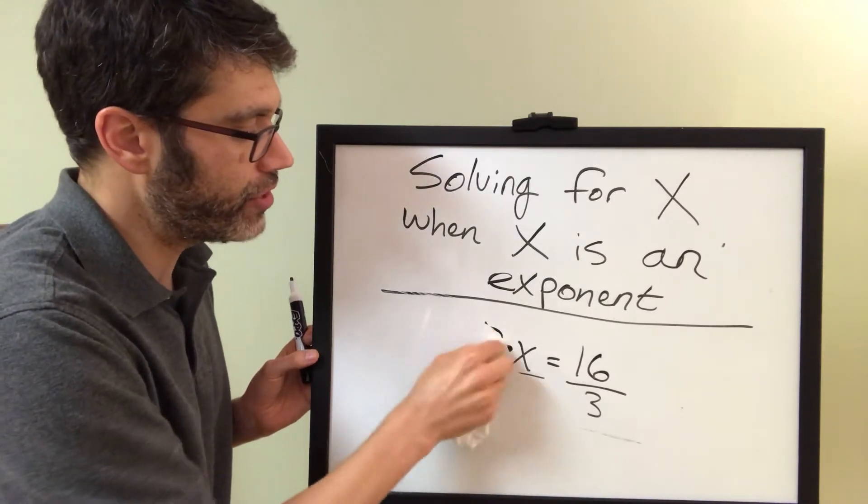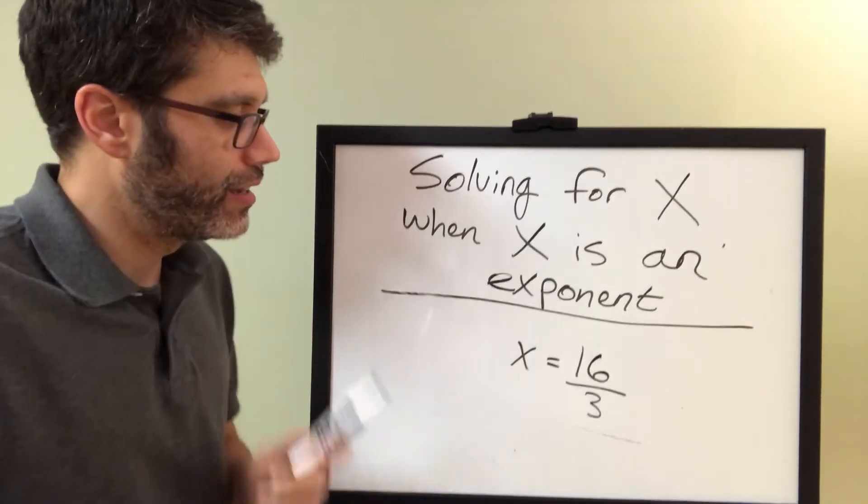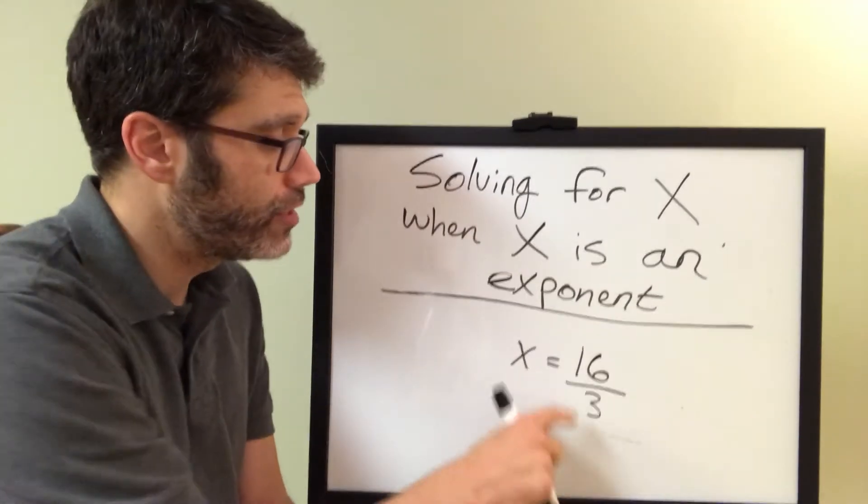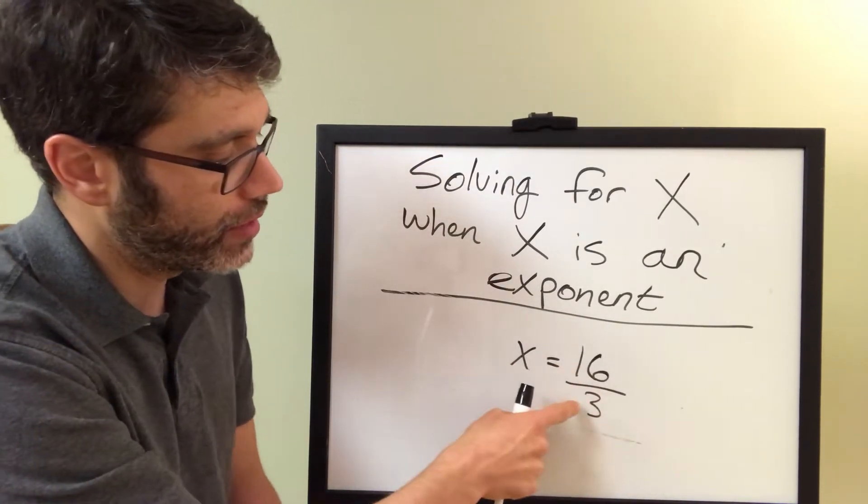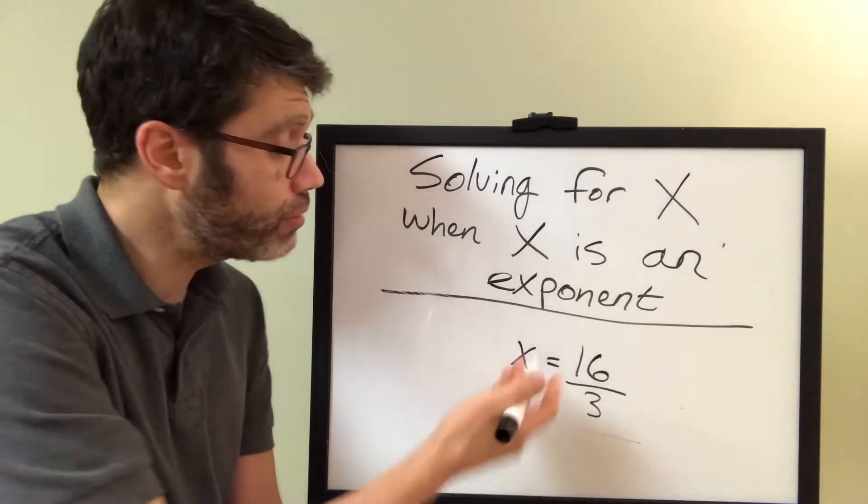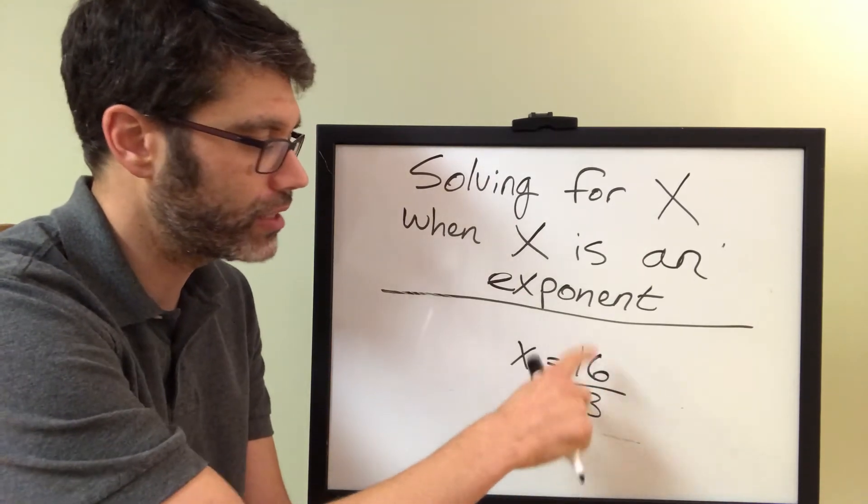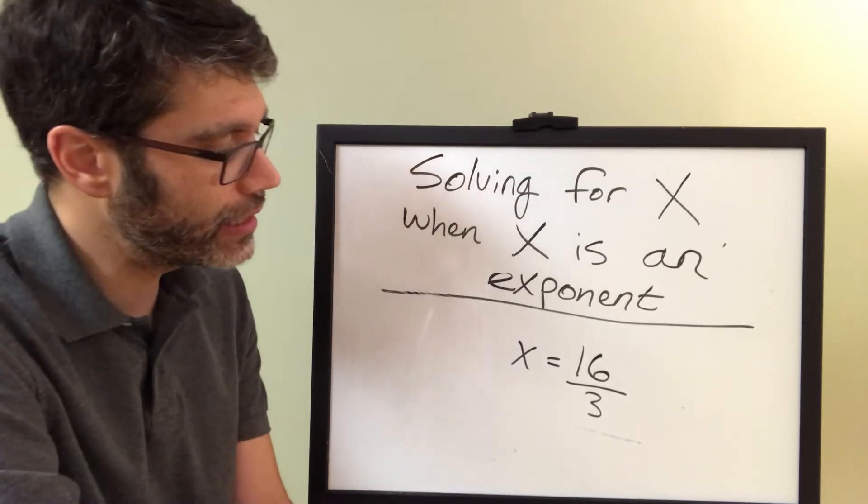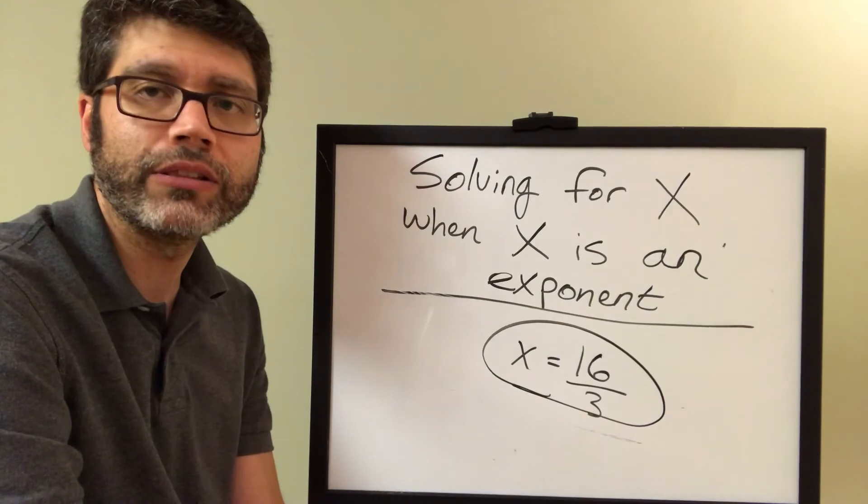Now, 16 thirds, not a really friendly, cozy number, but it's what we got. And you can't reduce 16 thirds by anything. There isn't a common factor between 16 and 3. Improper fractions are fine. I don't mind improper fractions at all. You don't have to make this into a mixed number. You don't need to make it into a decimal. Since you can't reduce 16 thirds anymore, just leave it as it is. So that's our answer. x equals 16 thirds.